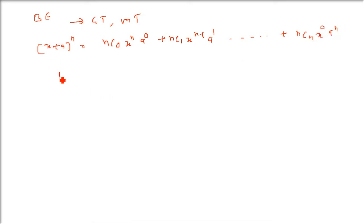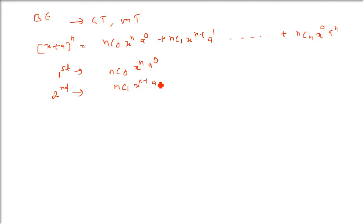The first term is nC0 · x^n · a^0. The second term is nC1 · x^(n-1) · a^1. Can you see a pattern here? The subscript of C is always 1 less than the term number — the term number is 1 more than the subscript of C.